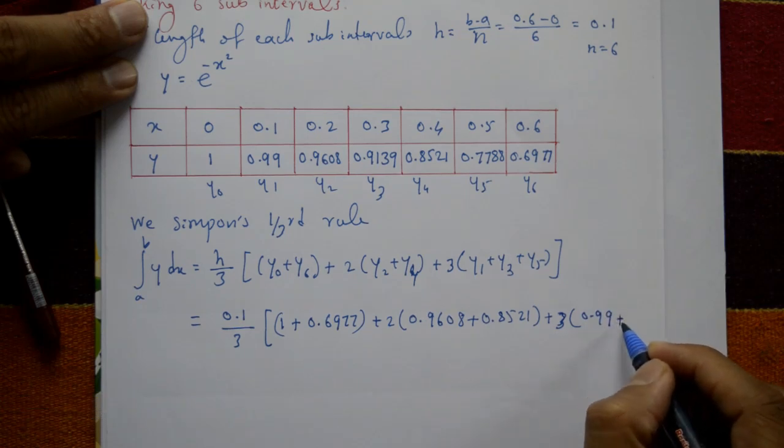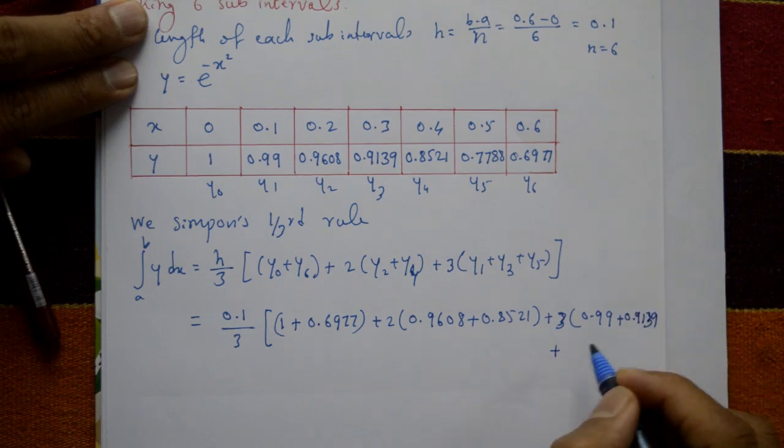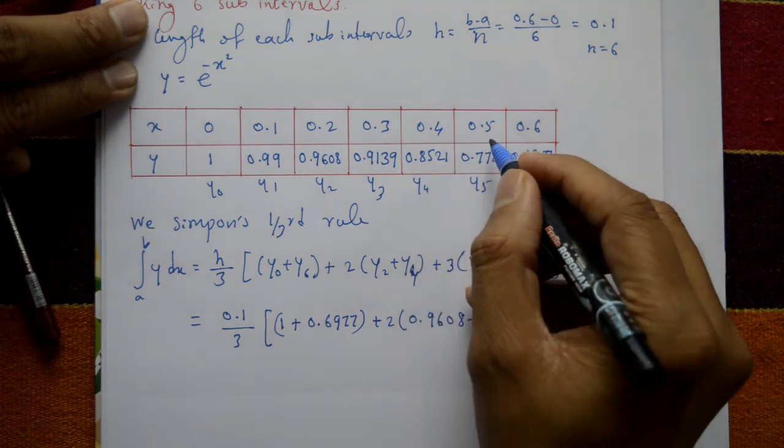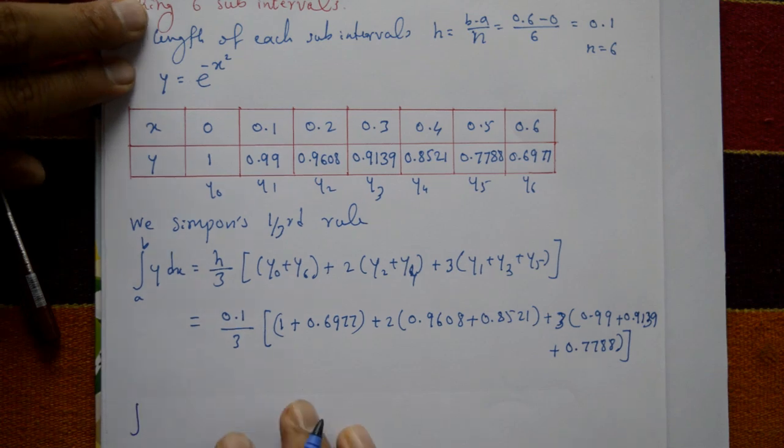Plus 4 times y1 is 0.99 plus y3 is 0.9139 plus y5 is 0.7788.